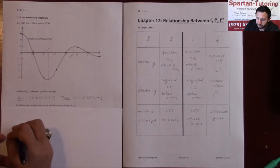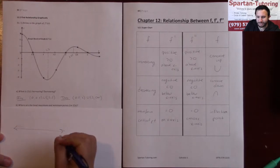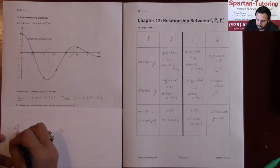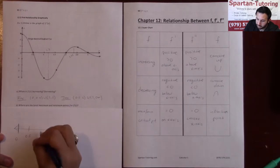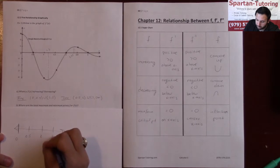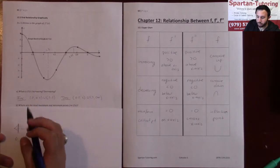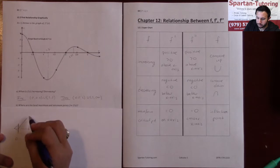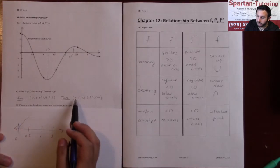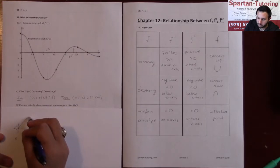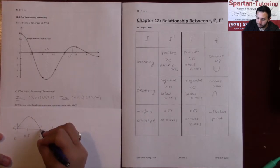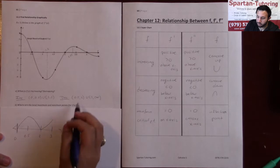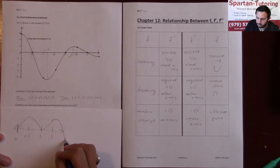If it starts here at 0, then I've got 0.5, and then I've got 2, and then I've got 3. Between 0 and 0.5 you're increasing. Between 0.5 and 2 you're decreasing. Between 2 and 3 you're increasing, and then between 3 and infinity you're decreasing.